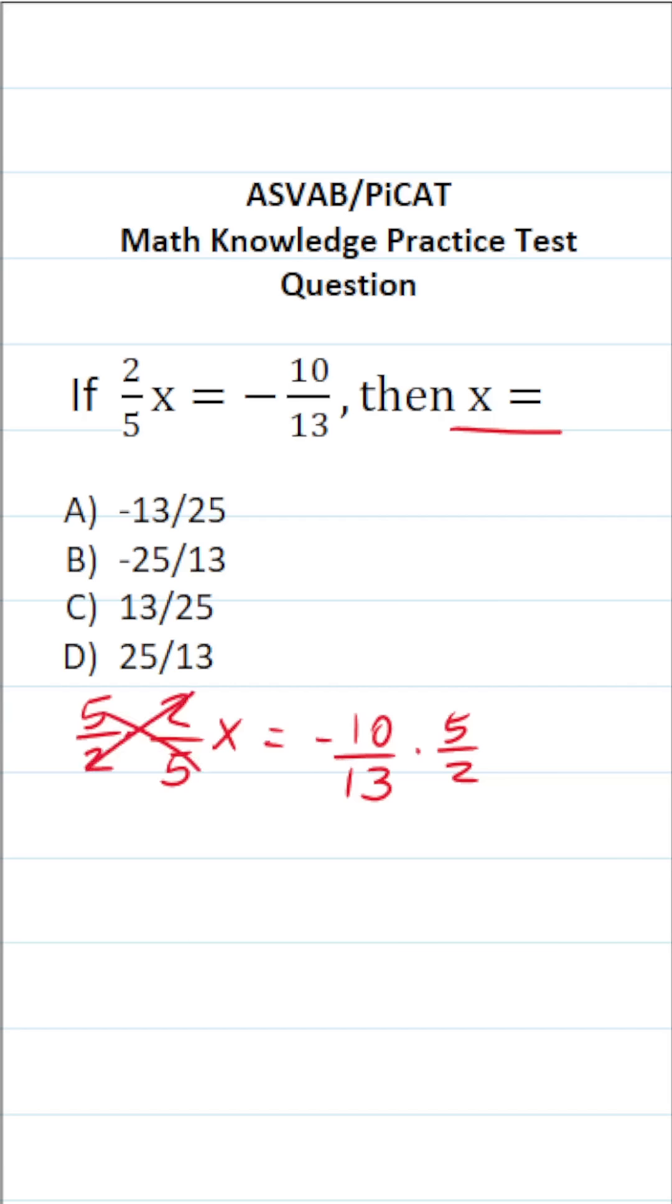In doing so, this crosses out here and here, leaving you with x over here. This is negative 10 over 13 times 5 over 2.